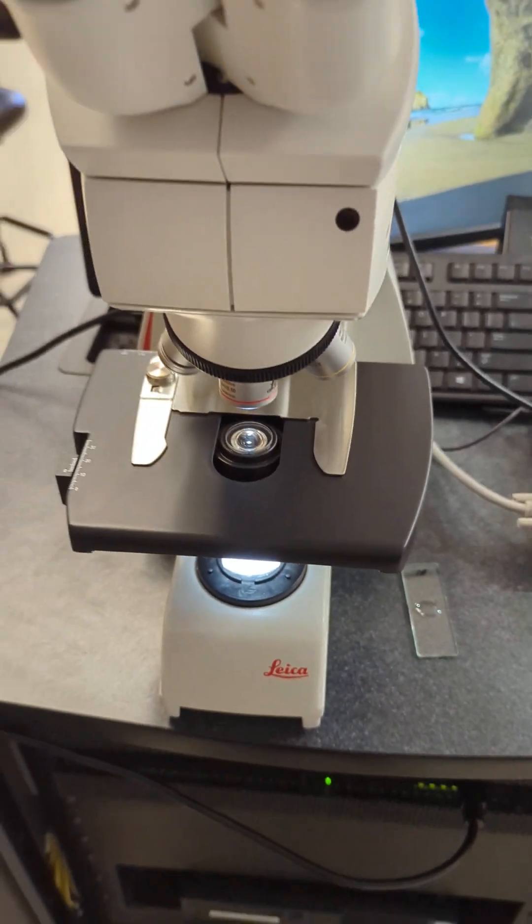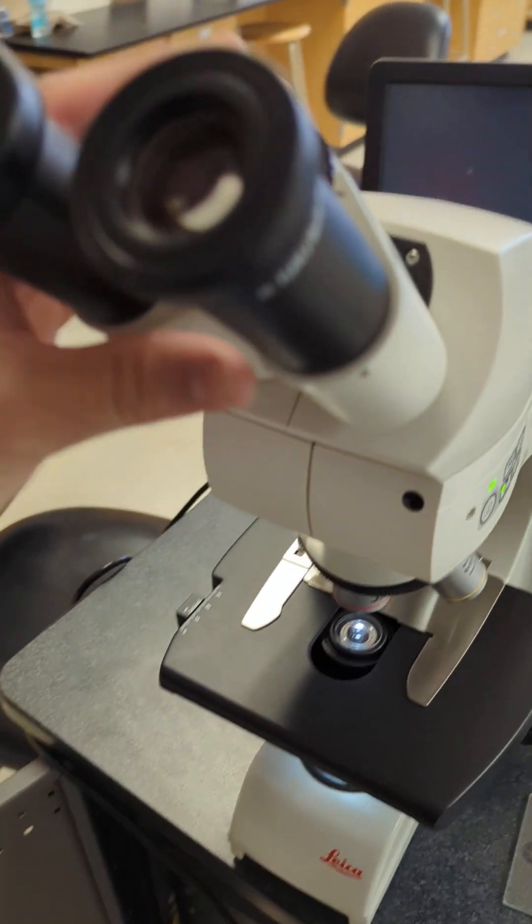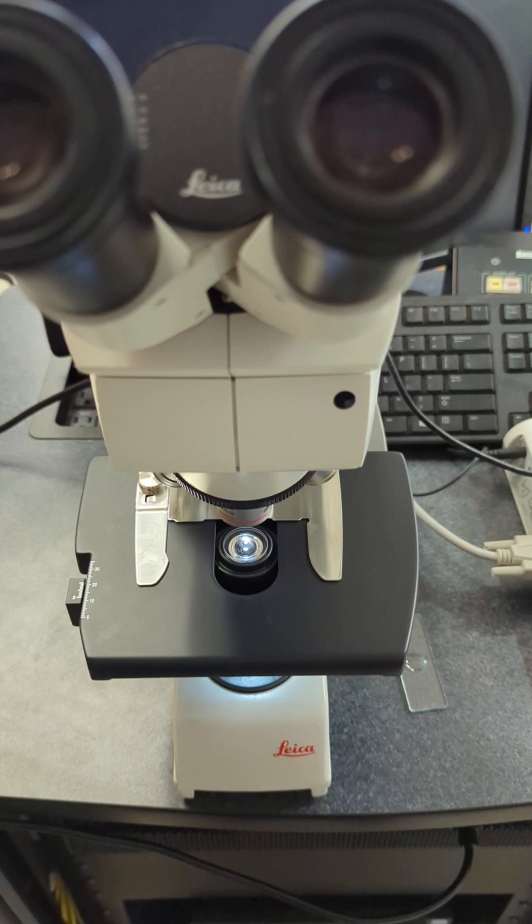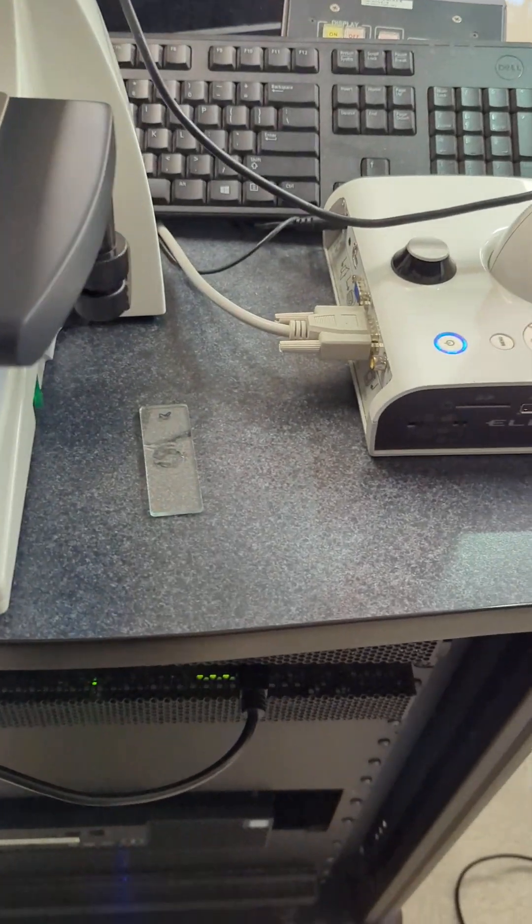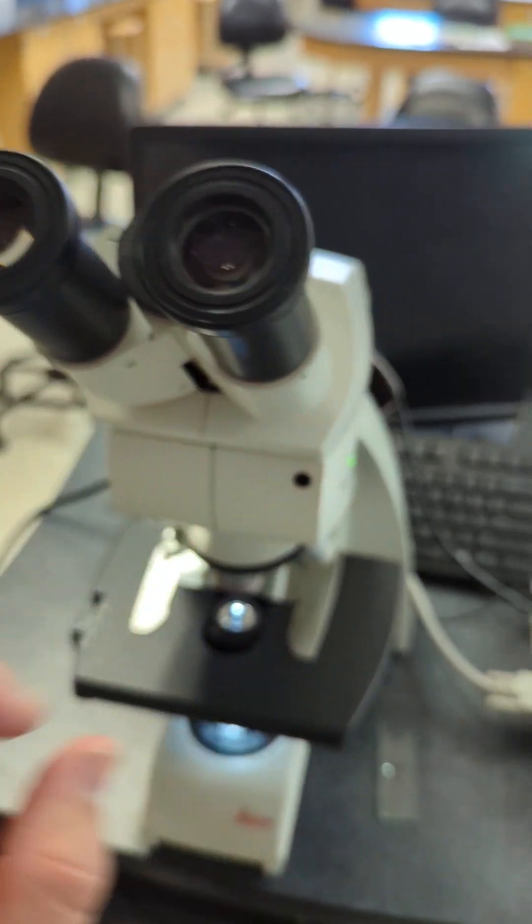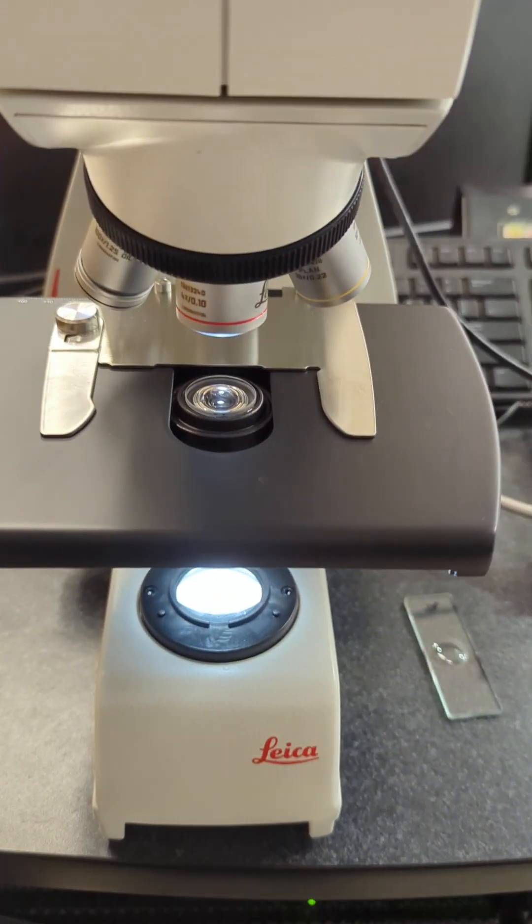For the students, there's no adjustment in the eyepieces other than getting their diopter setting—the distance between their two eyes. That's all they need to do up there until they get the centric view.